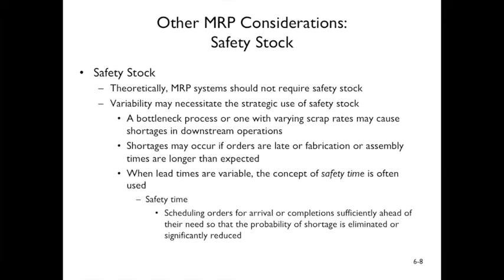Other MRP considerations include safety stock. Theoretically you don't need safety stock, but it's good to have for strategic reasons — bottlenecks in process or varying scrap rates may cause shortages downstream. If you have a QA problem and have to scrap an assembly, safety stock lets you build a follow-up item. Shortages could also occur if fabrication or assembly times run longer than expected. Since lead times are variable, the concept of safety time is often used — ordering something to arrive a week before you need it, eliminating the probability of not having it when needed.